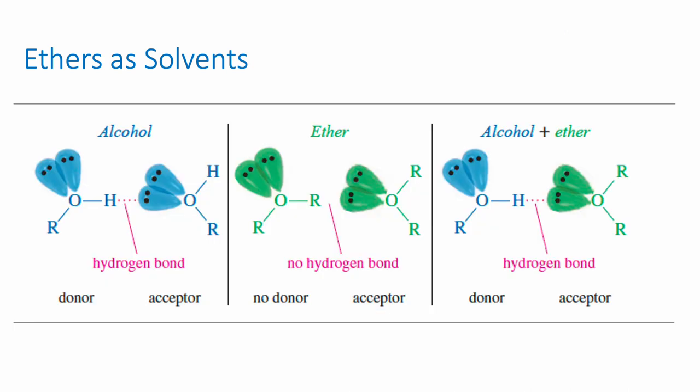Alcohols are capable of hydrogen bonding; ethers are not capable of hydrogen bonding with each other. A hydrogen bond requires two components: a hydrogen bond donor, which is the electronegative atom bonded to H — either nitrogen, oxygen, or fluorine — and a hydrogen bond acceptor, which is a lone pair of electrons on a nitrogen, oxygen, or fluorine.